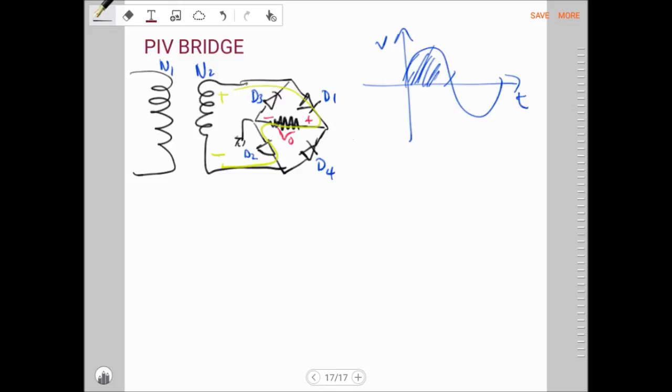Let's say we want to find the peak inverse voltage of D4. If you draw the circuit, you have the output voltage across the resistor, the diode D4, and the diode D2 which is on. D2 has a voltage drop V_gamma, positive here and negative here.